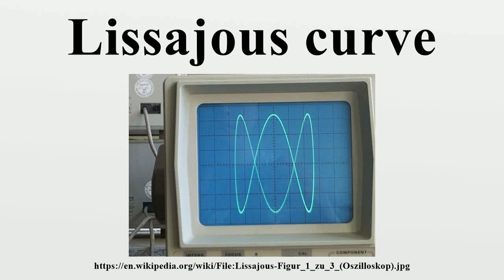This family of curves was investigated by Nathaniel Bowditch in 1815, and later in more detail by Jules-Antoine Lissajou in 1857. The appearance of the figure is highly sensitive to the ratio A/B.